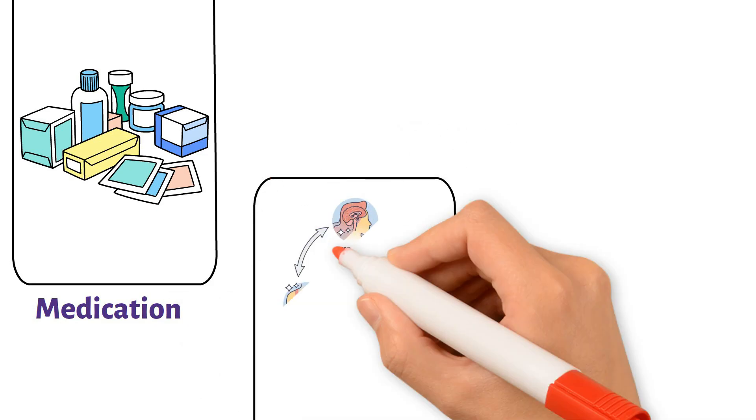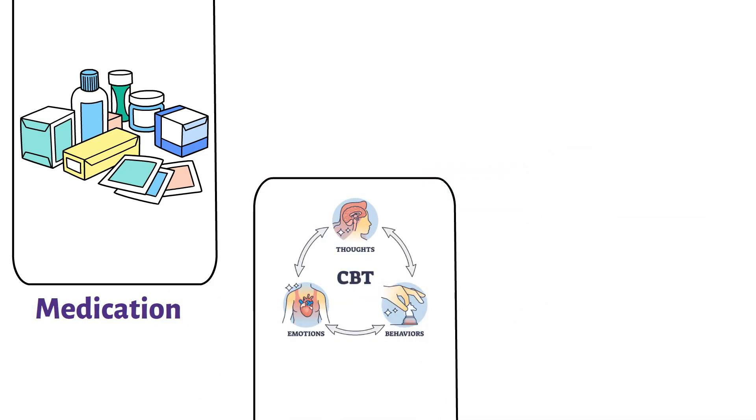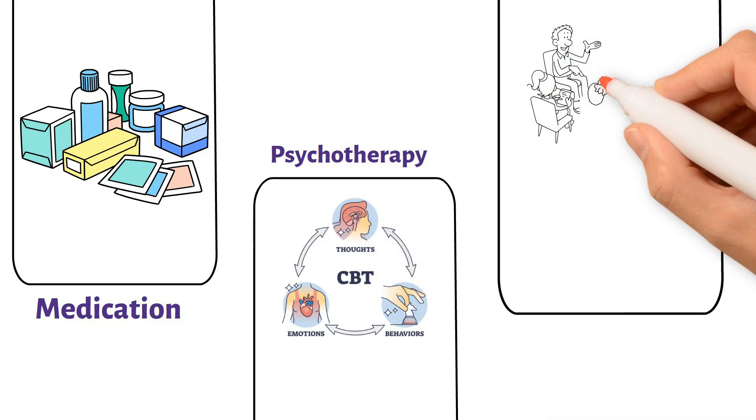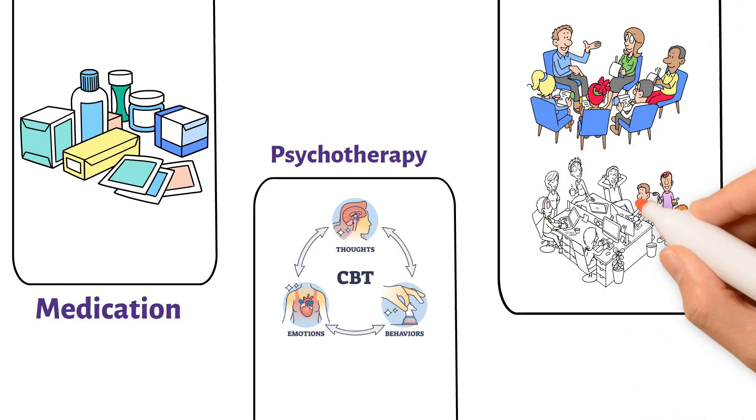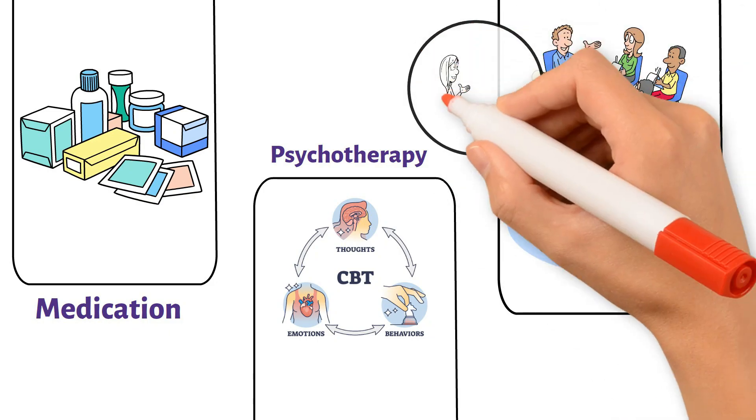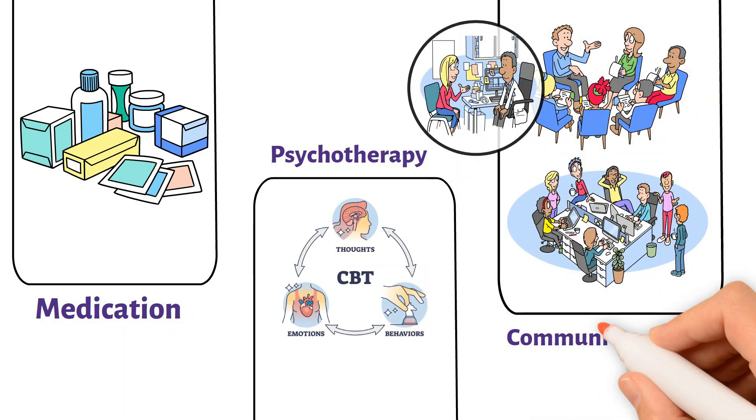Next, psychotherapy, such as cognitive behavioral therapy, which helps change thinking and behavior. Next, community support and recovery programs, including support groups, job training, and therapy to help manage everyday challenges. Treatment is usually lifelong and highly personalized.